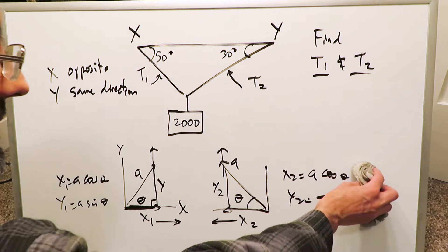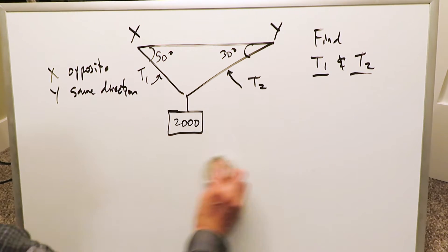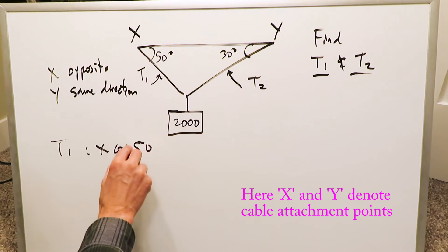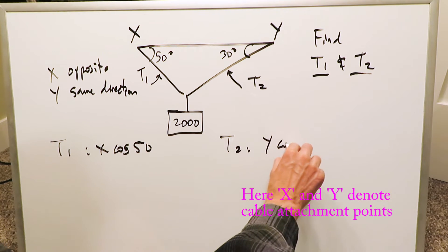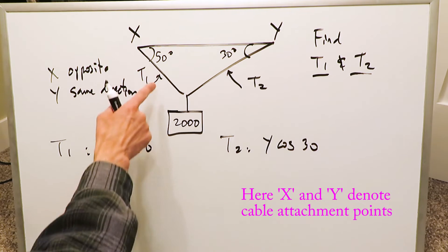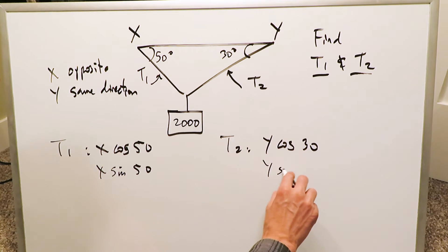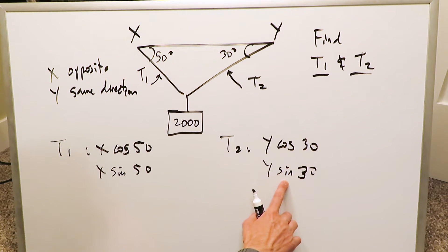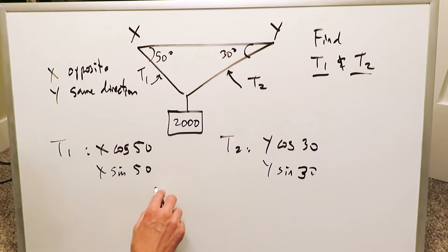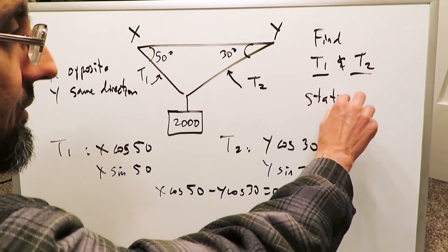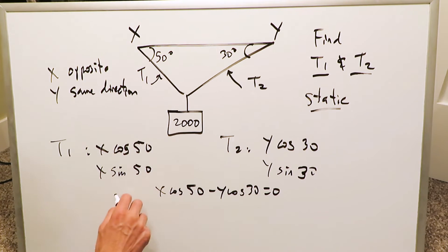The horizontal components oppose each other, but the vertical components are in the same direction and opposed by the weight. With that as background, let's create the equations. For cable tension T1, the horizontal component is x cosine 50. For T2, the horizontal component is y cosine 30. Since they oppose each other and the system is static: x cosine 50 minus y cosine 30 equals 0.